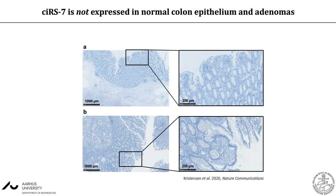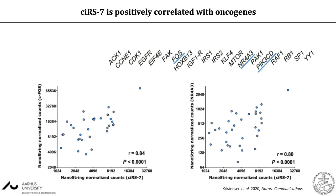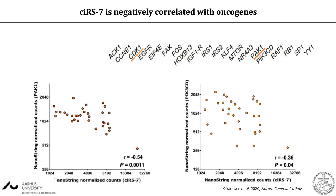We found that CIRS7 is not expressed in normal colon epithelium and also not in adjacent adenomas. We interpret this as CIRS7 not being shut down or downregulated during cancer evolution, but simply not being expressed in the cancer-initiating cells, which is why all cancer cells are negative for CIRS7 expression. We also analyzed a number of miR-7 target genes within the colon cancer specimens and found some positive correlations between certain oncogenes and CIRS7, as well as some negative correlations not explained by the sponging theory.